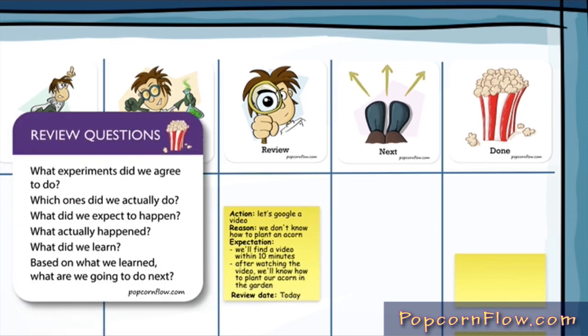What experiments did we do? What did we expect to happen? That we would find the video and we would know how to plant the acorn in the garden. So what actually happened?